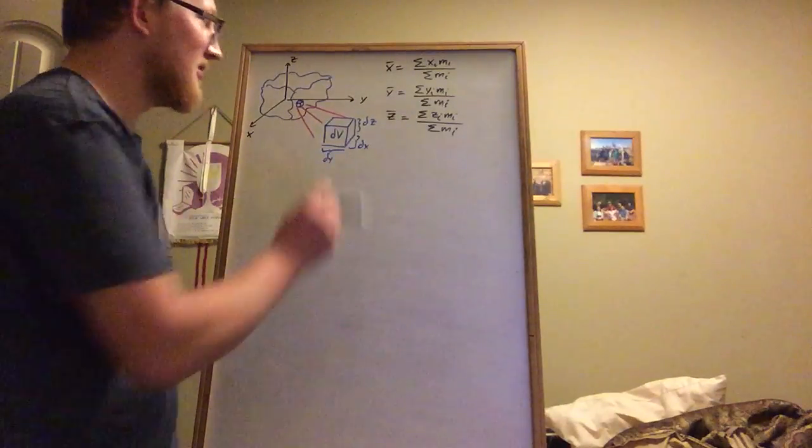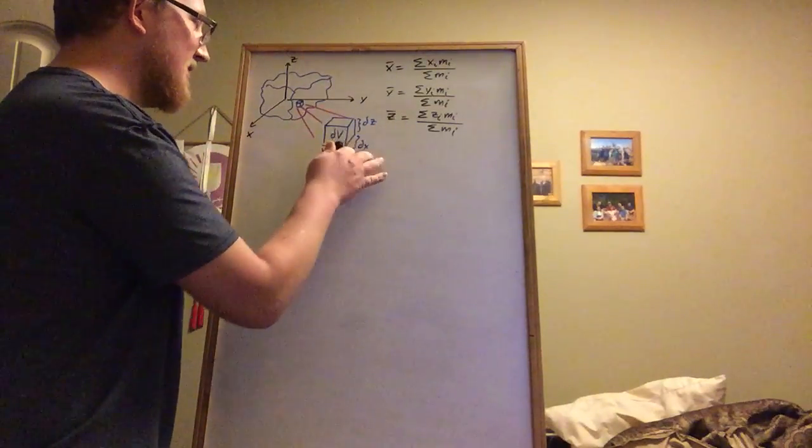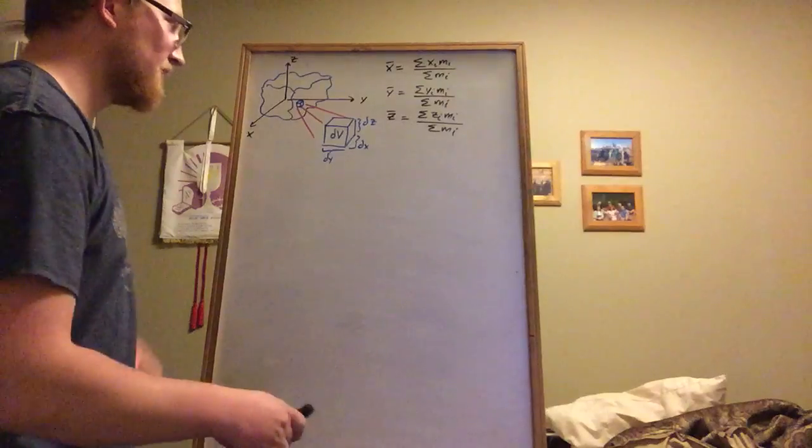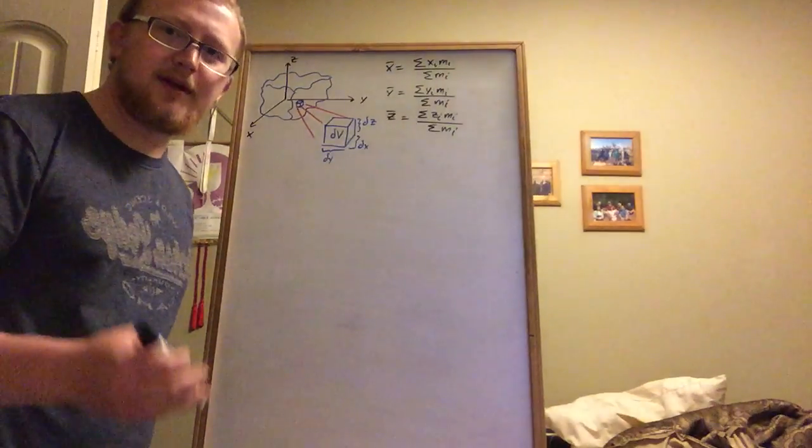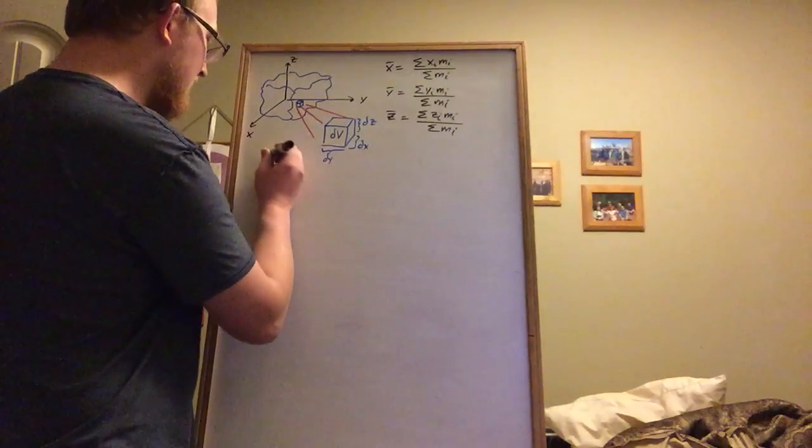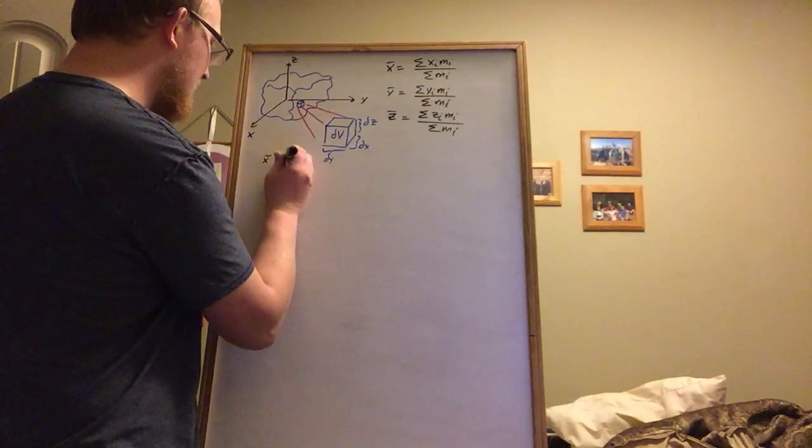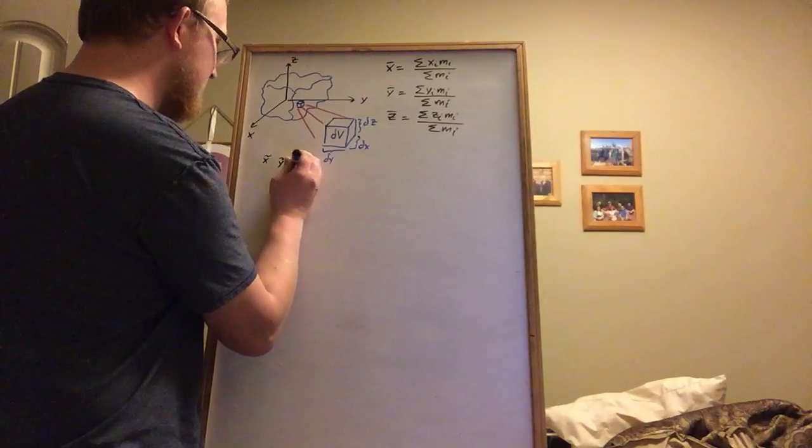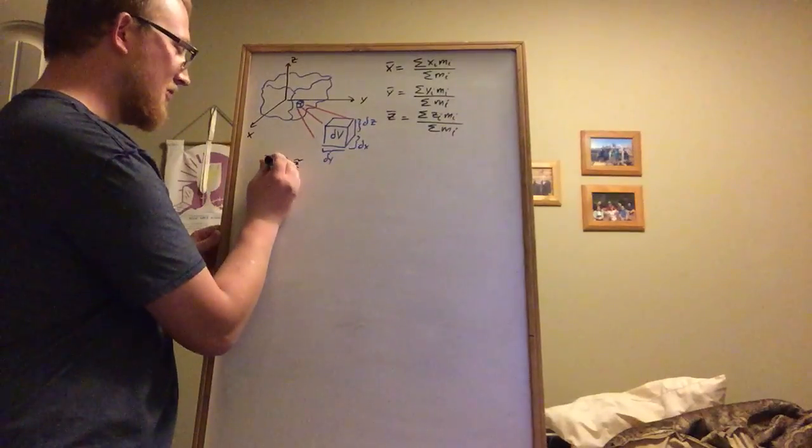That small chunk of volume is going to have a side length dy, side length dx, and a side height dz. And so we could say that this cube's volume is dz times dx times dy.